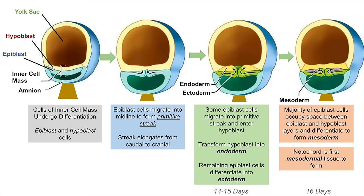The formation of the mesoderm takes place at roughly 16 days following fertilization, and the first mesodermal tissue to form is the notochord of the organism. So this is essentially the process of gastrulation whereby we transform two layers — the epiblast and hypoblast layers — into the three germ layers: the ectoderm, mesoderm, and endoderm. The three germ layers will eventually become the organism itself.